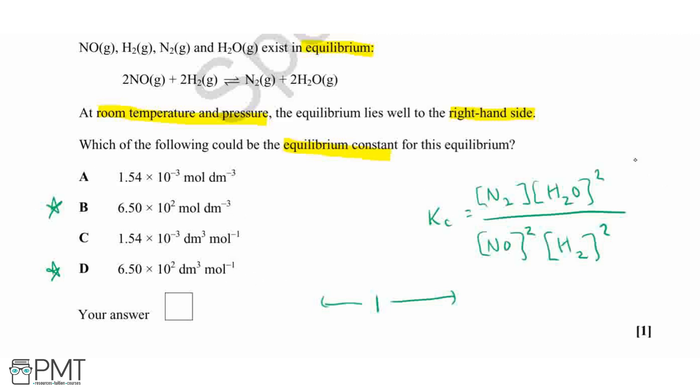So the units for concentration are moles per decimetre cubed. So on top, we've got moles per decimetre cubed effectively cubed. And then on the bottom, we've got our moles per decimetre cubed to the power of 4. So overall, we can cancel out the top and we can cancel out 3 from the bottom, which just gives us the moles per decimetre cubed on the bottom.